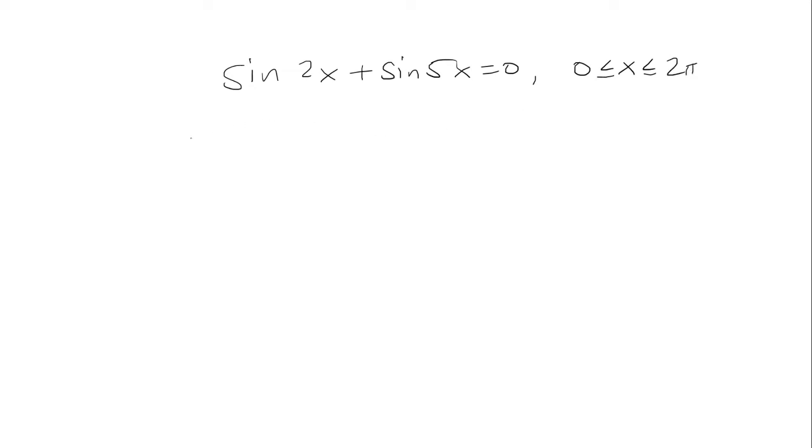In order to solve this problem, I need to use the formula sine alpha plus sine beta equals 2 times sine of alpha plus beta all over 2 times cosine of alpha minus beta all over 2.